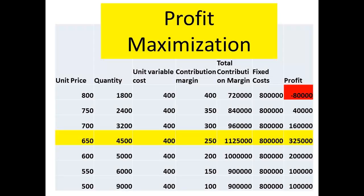The table shows the figures for profit maximization. When the unit price is very high, at $800, then the quantity demanded is low, only 1,800 units. This would actually produce a loss of $80,000. If the unit price was set at $500, then demand would be high, perhaps around 9,000 units, producing a profit of $100,000. However, this is not the unit price that would yield maximum profit. Selling at $650, the demand is 4,500 units, producing the maximum profit of $325,000.